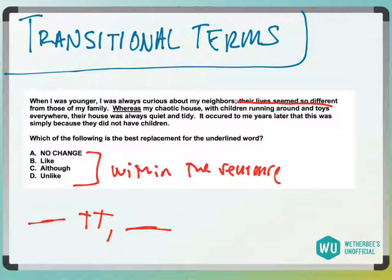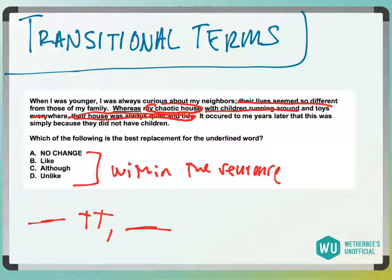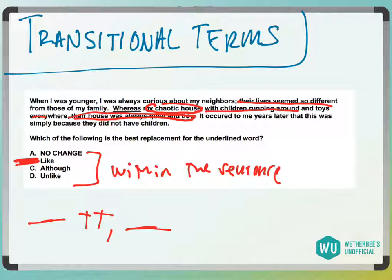So what we have here is something like: 'my chaotic house with children running around and toys everywhere — their house was always quiet and tidy.' We need something that signals reverse logic. So 'unlike my chaotic house, with children running around and toys everywhere, their house was always quiet and tidy' — that's answer choice D.